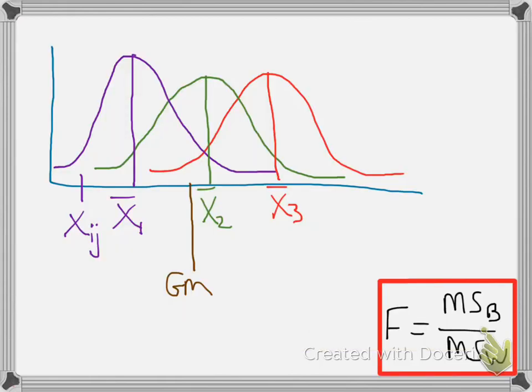All right, so in a one-way ANOVA, or any ANOVA, what we're looking to calculate is an F value, and then once we calculate the F value, we look in Appendix C and determine whether it's statistically significant. So here's the formula for the F value, and it's important to pay attention to what's going on here. The top of the F value is the MSB, and that is the average square difference between group means.